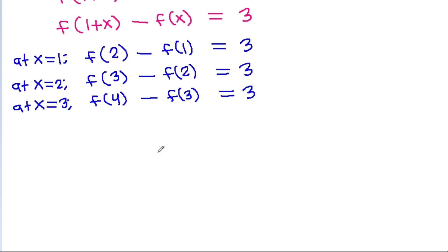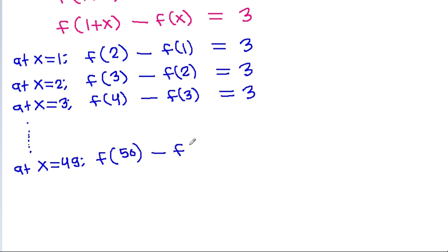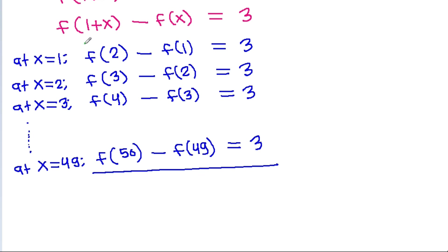And at x equal to 49, f(1+49) will be f(50), minus f(49), it will be equal to 3. And if we add all equations, then f(2) will get cancelled, f(3) will get cancelled, f(4) will get cancelled, and in the same way f(49) will get cancelled.